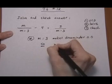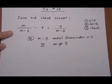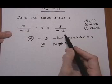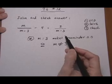So m cannot equal 3. And no matter what your denominator is, you can always figure out what makes it go to zero by setting it equal to zero and solving that equation.